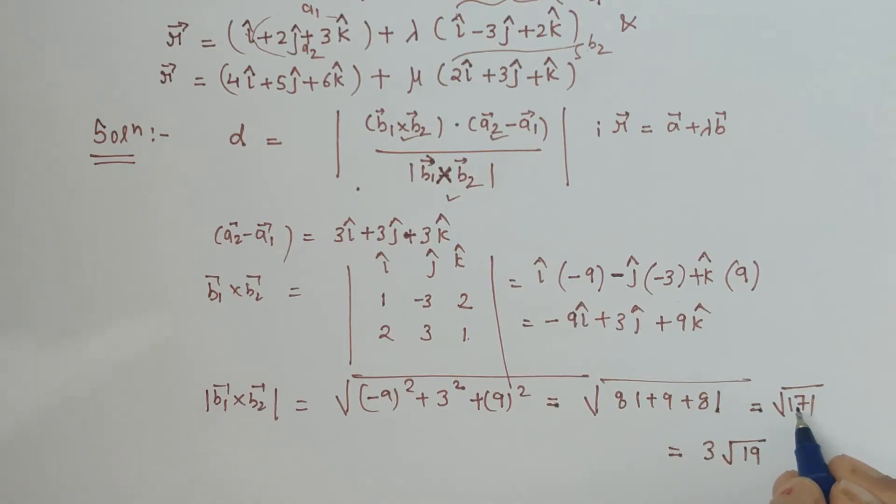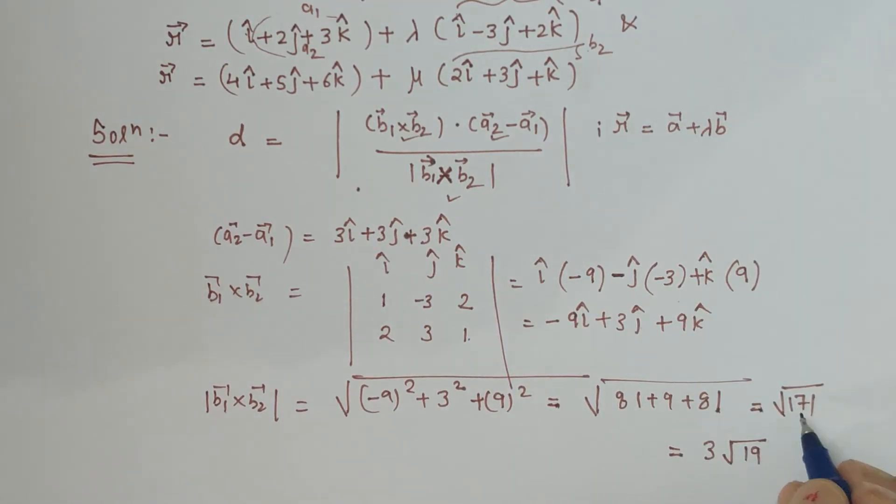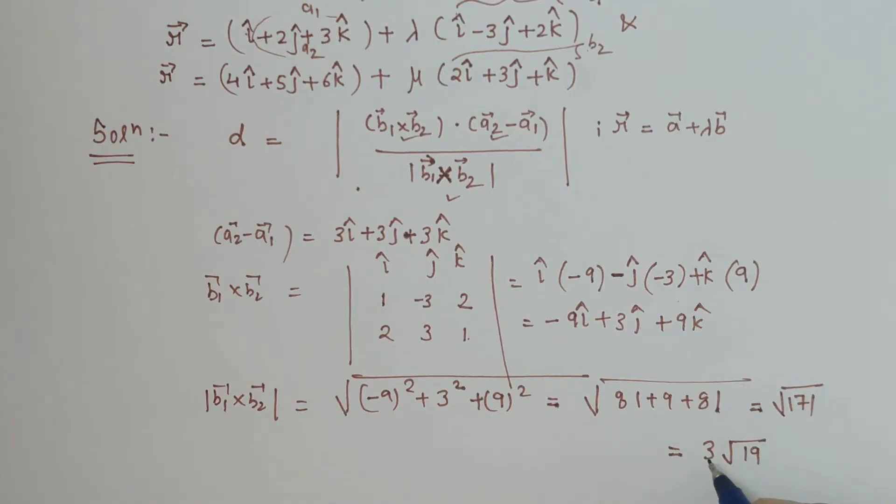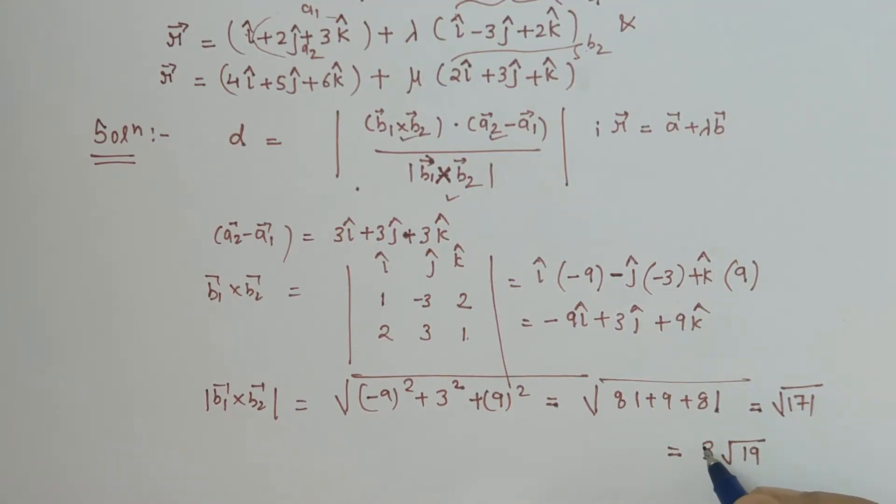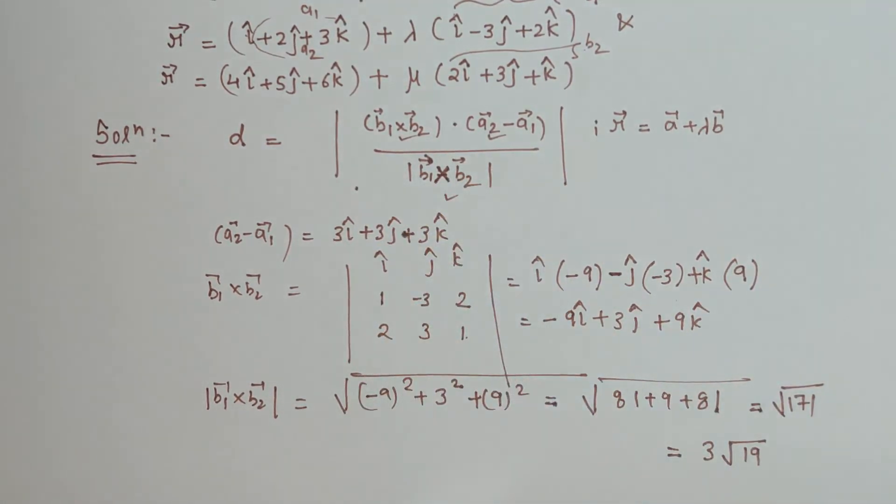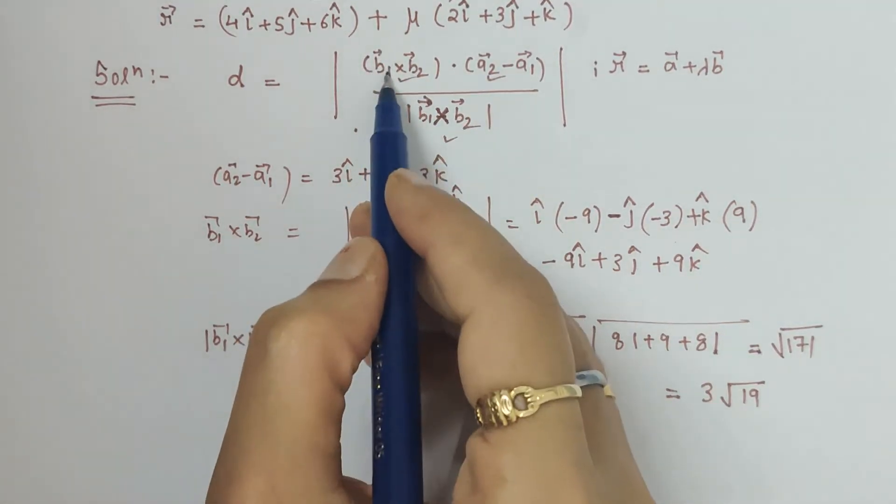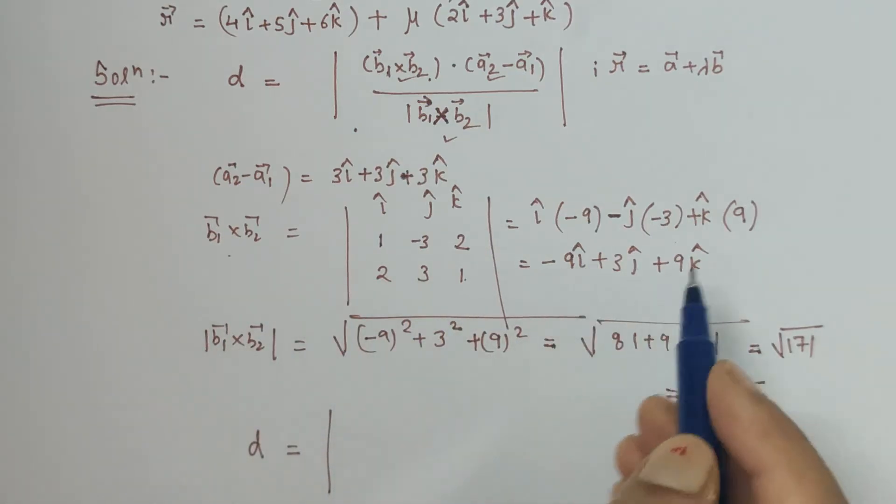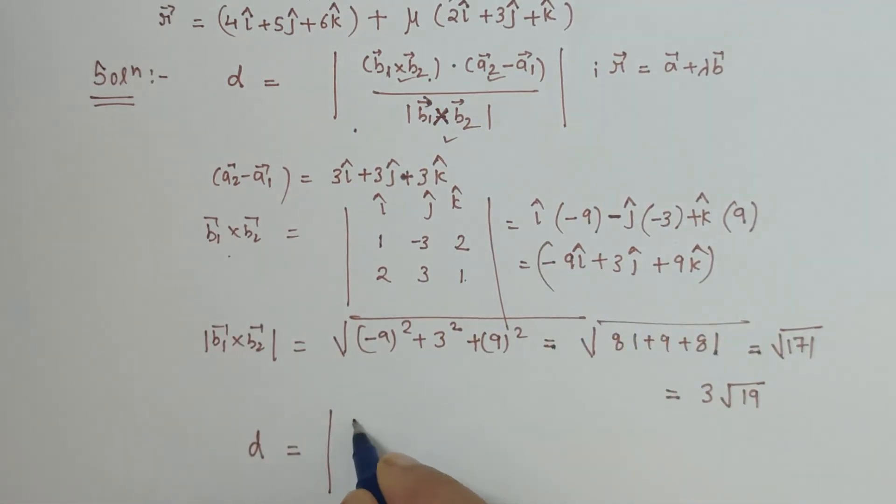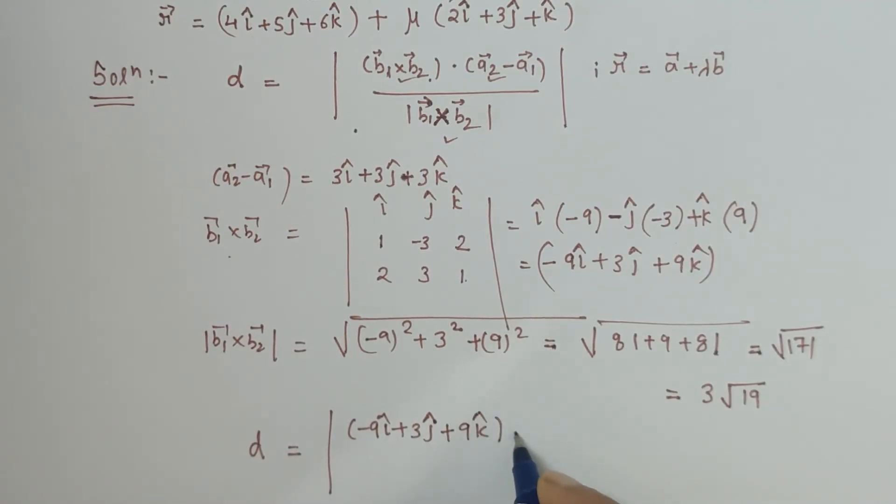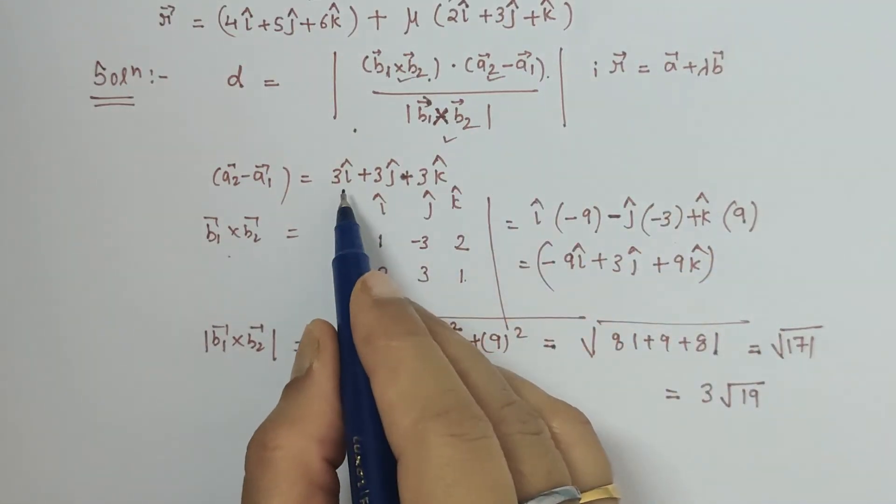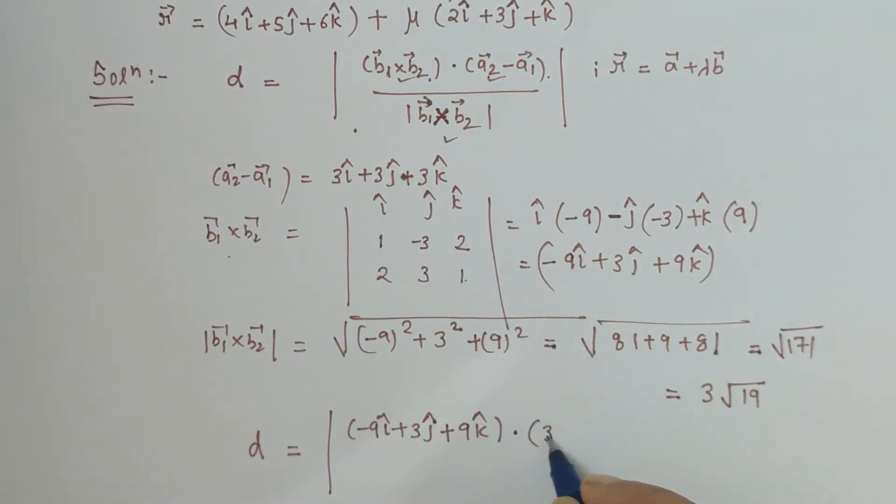So 3 is taken out. Now let us substitute the values in the given formula. The formula is magnitude of b1 cross b2 dot with a2 minus a1, over magnitude of b1 cross b2. So let us write it: minus 9 i cap plus 3 j cap plus 9 k cap dot a2 minus a1, that is 3 i cap plus 3 j cap plus 3 k cap.